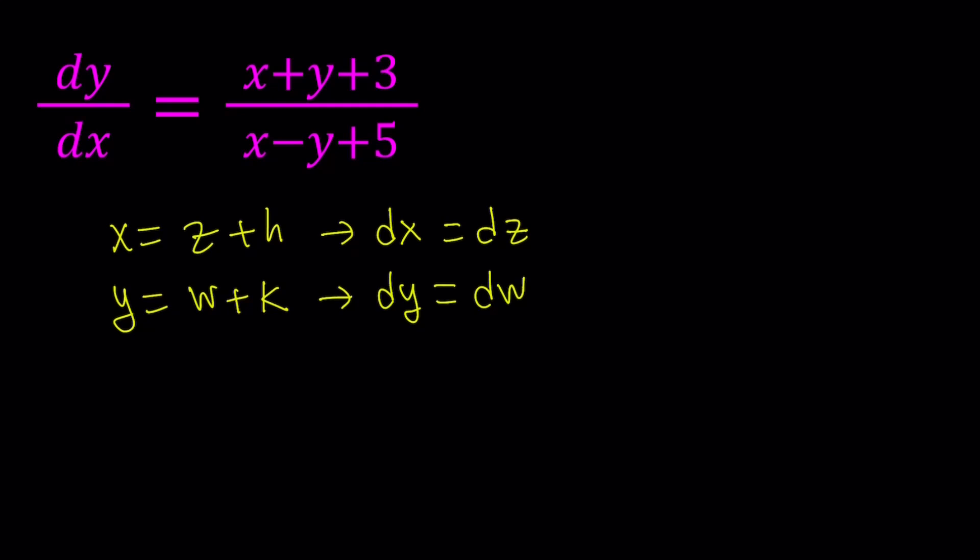Now, we're going to use it in our expression and see what happens. So, our original expression contains dy over dx. But right now, I can replace dy with dw and I can replace dx with dz. And then this becomes dw over dz.